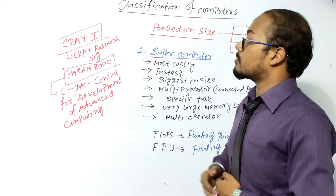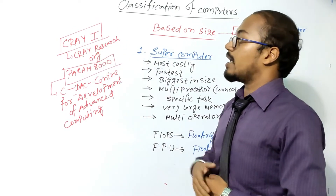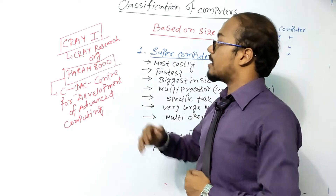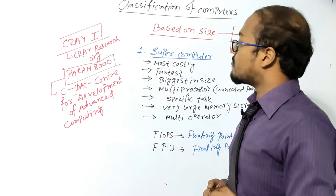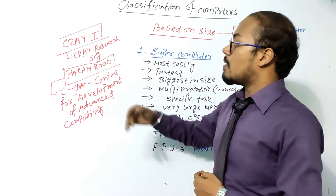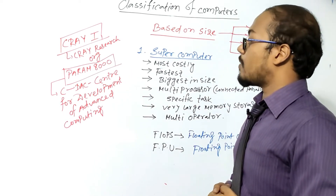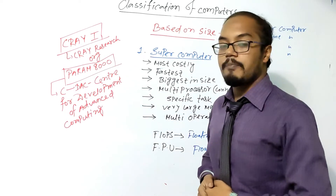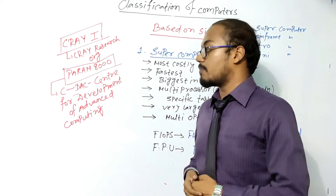The first supercomputer in the world was Cray-1, designed by Cray Research Organization. India's first supercomputer was Param-8000, designed by CDAC — the Center for Development of Advanced Computing.